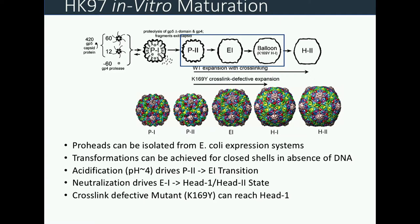In vitro, an analogous transformation can be triggered by modulation of pH. From PROHEAD-2, dropping pH leads to a transition to the expansion intermediate, and then neutralization is required to reach the final states. HK97 is famous for making crosslinks and having a chainmail structure, but I'll be talking about a mutant variant where one of the crosslinking residues is mutated. It doesn't form crosslinks but still reaches a similar final state, referred to as Head-1.